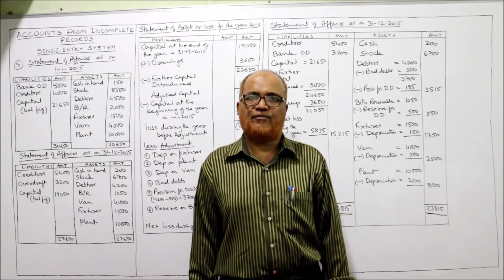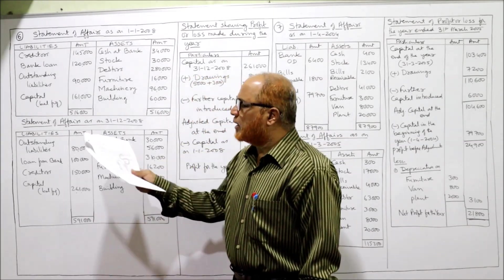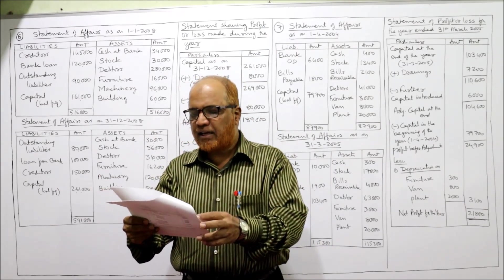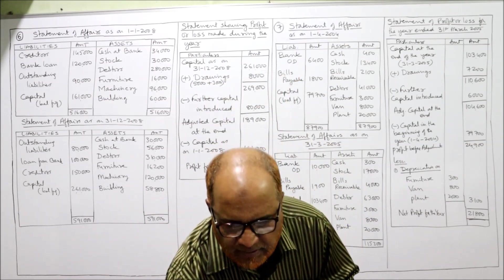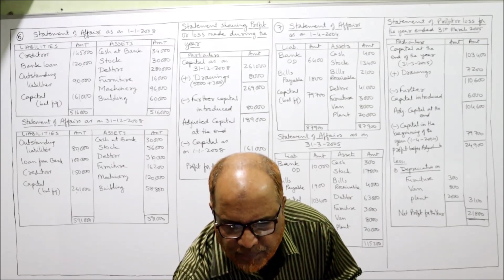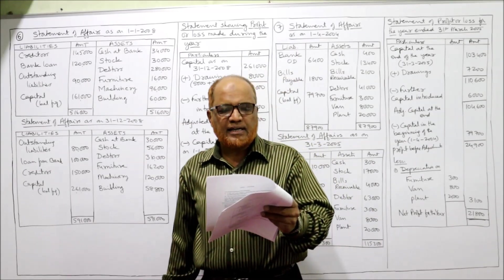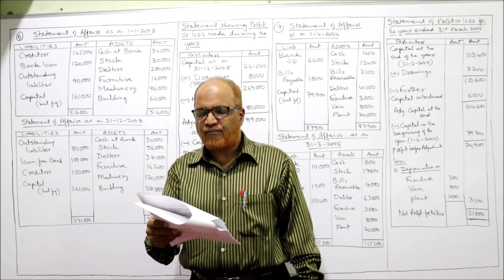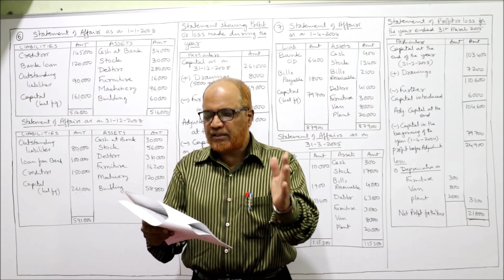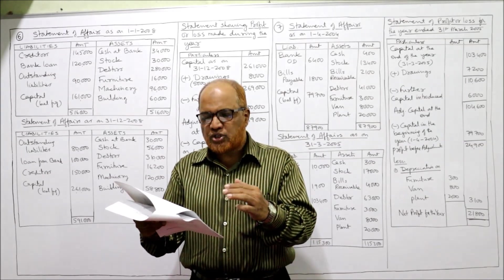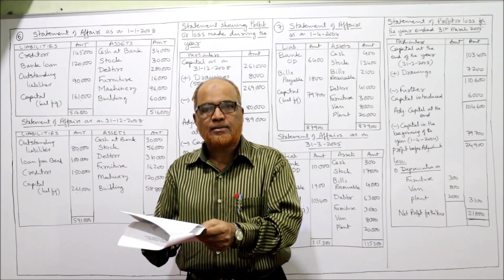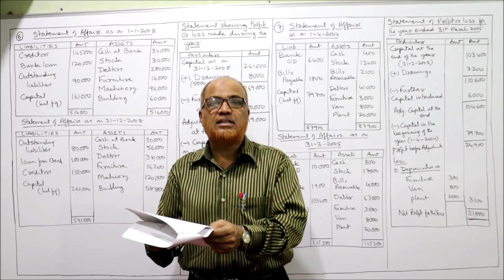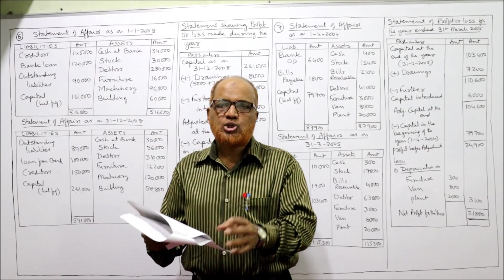Now problem number six. The following are the assets and liabilities of A at the beginning and end of the year 2008. 1st January 2008 is opening; 31st December 2008 is closing. Assets include land and building, plant and machinery, furniture and fixtures, stock in trade, sundry debtors, and cash at bank. Liabilities include sundry creditors, loan from bank, and outstanding liabilities.